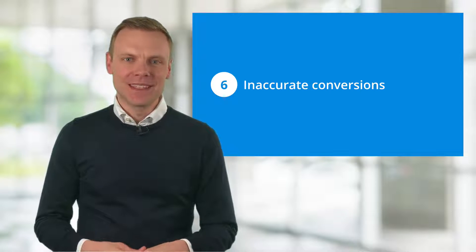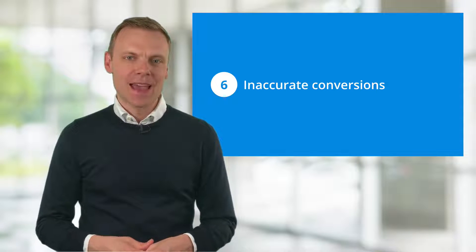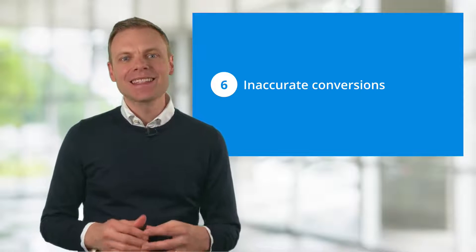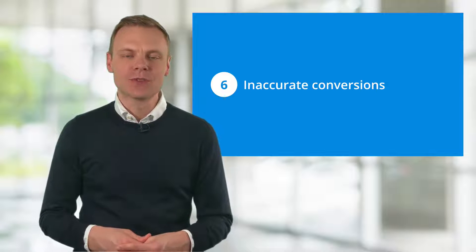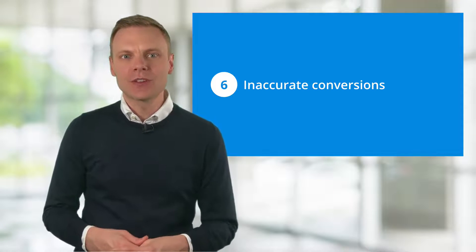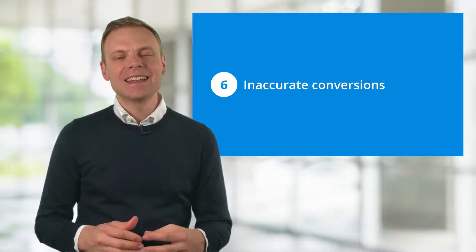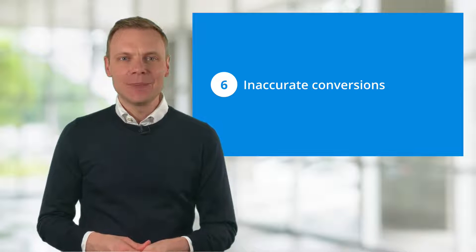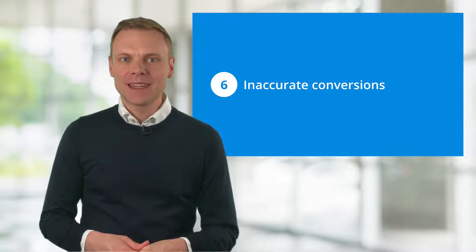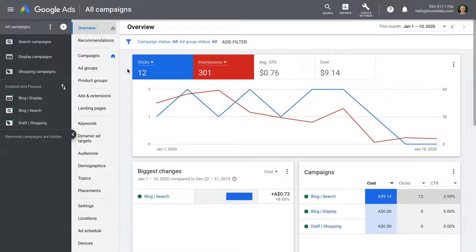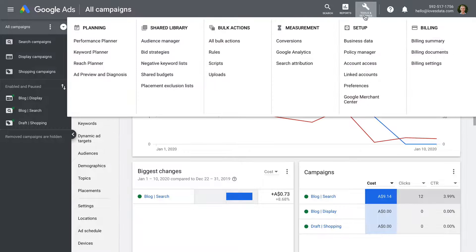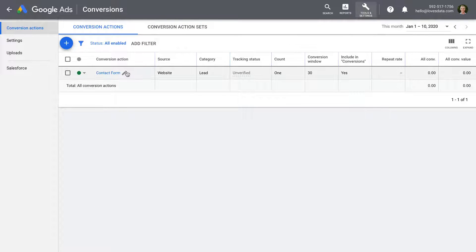Mistake number six is inaccurate or missing conversions. It's important to track conversions when you launch your campaign. If conversion tracking isn't set up, then it makes it harder to report on the performance of your ads. Conversion tracking can be confusing because there are different options in Google Ads. You can configure it directly inside your Google Ads account and import conversions from Google Analytics. Let's take a look — inside your account, select Tools and Settings, then Conversions. This allows you to see any conversions that have already been configured. To create a new conversion, click the plus sign.